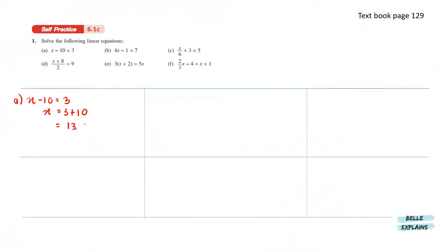Next, 4x minus 1 equals 7. Moving the numbers gives us 4x equals 7 plus 1. Simplifying that gives us x equals 2.